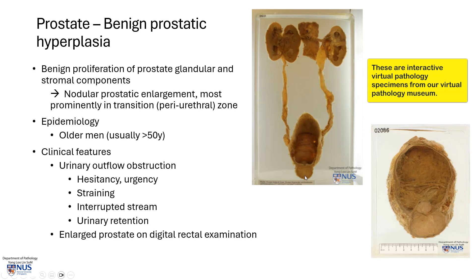In very severe cases that are not treated, there can also be obstruction giving rise to hydroureter and even potentially hydronephrosis. The bladder often has a trabeculated appearance due to the obstruction of urinary outflow. On digital rectal examination, the prostate can usually be palpated to be enlarged.